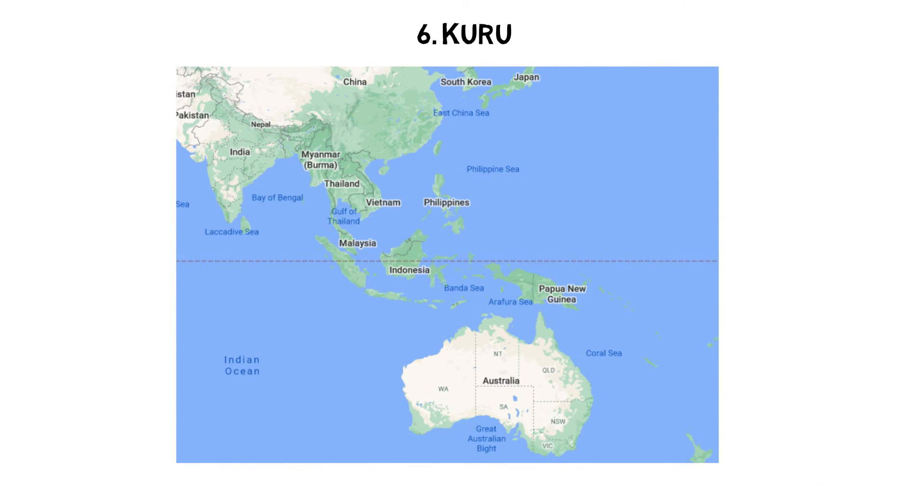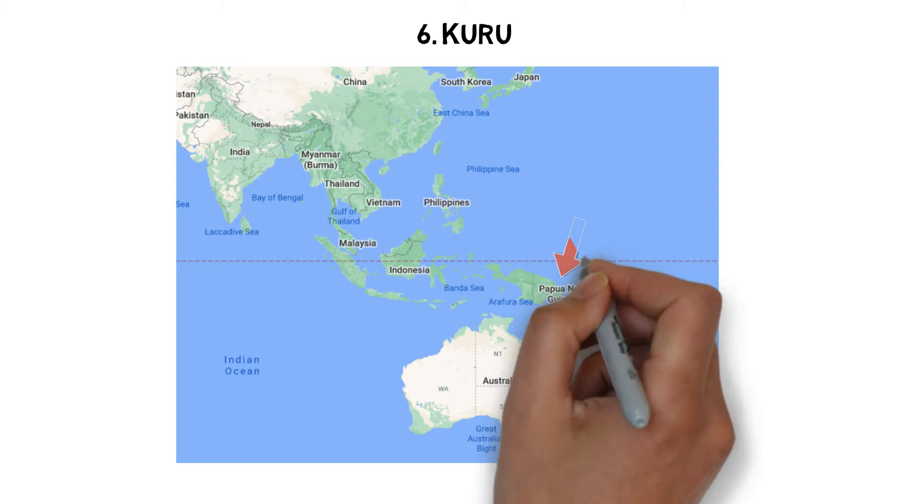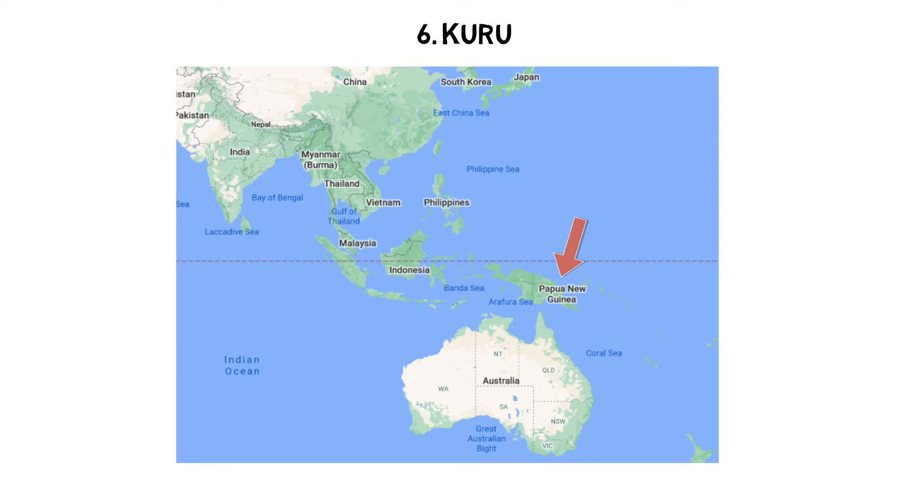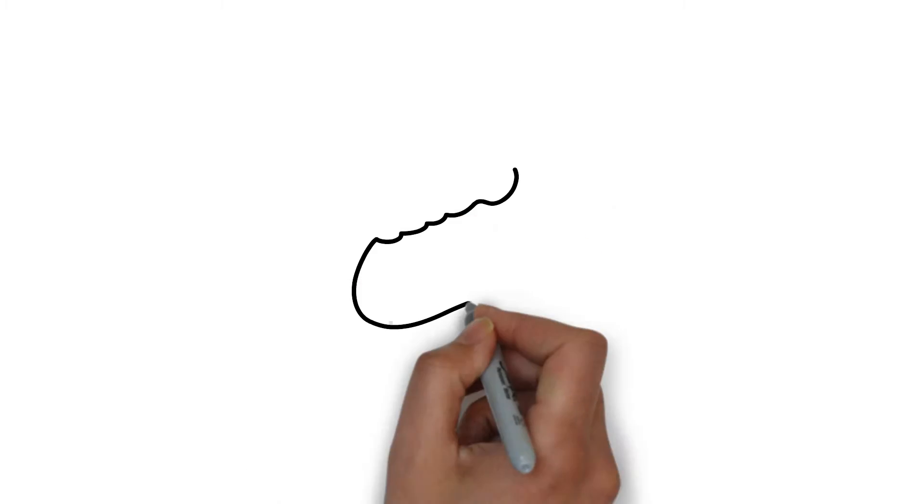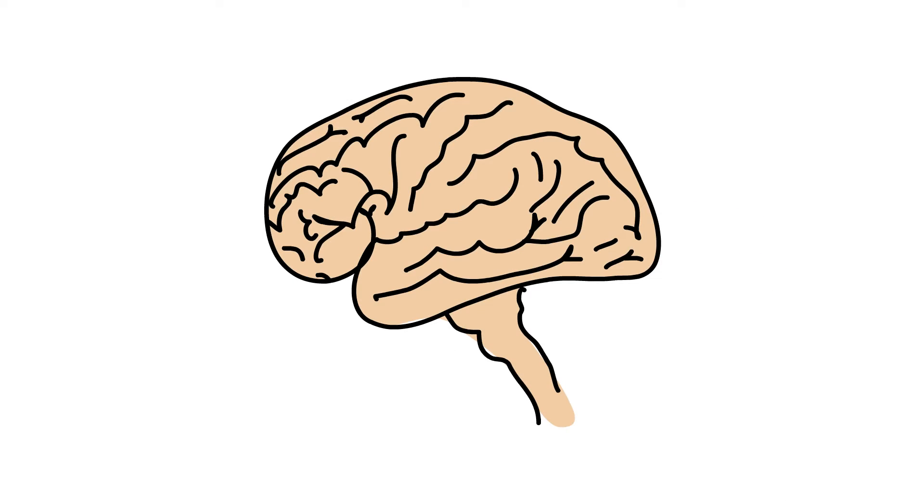Number 6: Kuru. There's a really good chance you're not going to contract Kuru, as it is a disease that can only be found in a remote region of New Guinea in the Fore tribe. The disease itself is caused by a type of protein called prions, which induce abnormal brain tissue building, resulting in progressive and incurable brain damage.